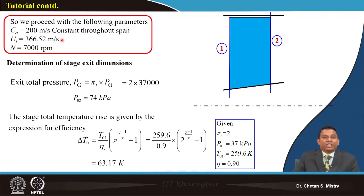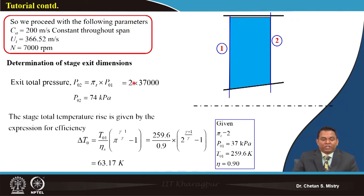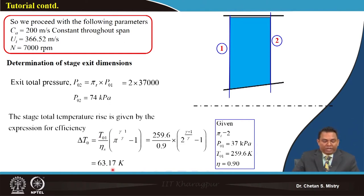At the entry condition, all parameters are known for constructing the velocity triangle — station 1 at entry, station 2 at exit. With the given pressure ratio of 2, we calculate the total pressure at exit and from that the total temperature rise delta T0 across the rotor, which comes to 63.17 Kelvin.